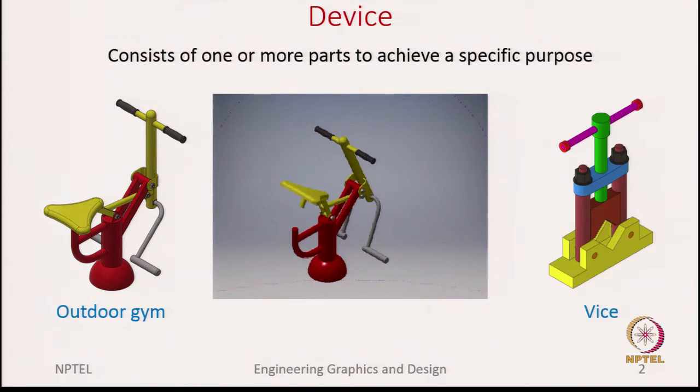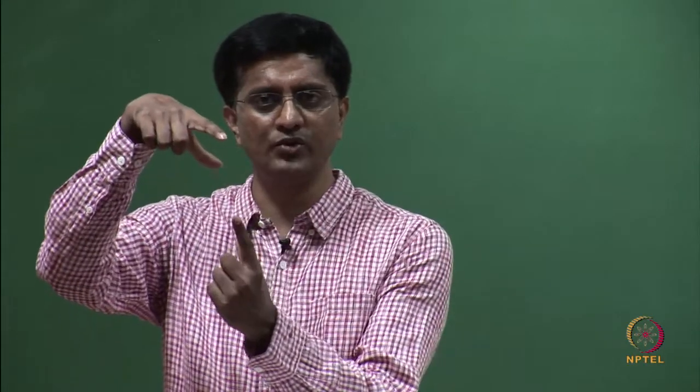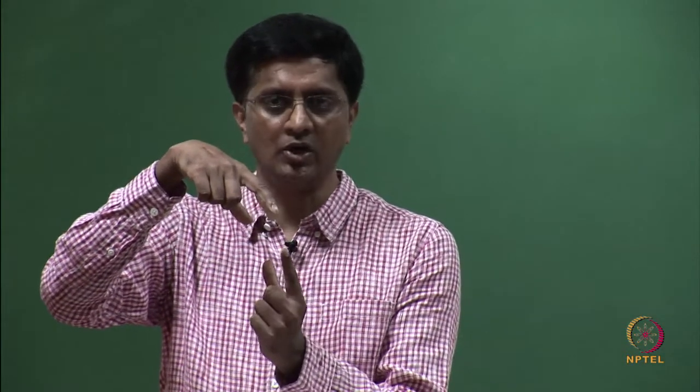The next example is a vise. This is a common tool used in most machine shops or any fabrication place. Essentially what it does is hold any object between two V-shaped jaws. When you turn the handle at the top, the upper jaw comes closer to the bottom jaw and holds the object.